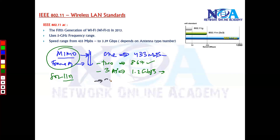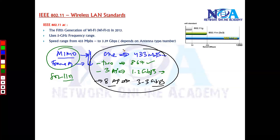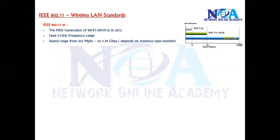Throughput increases as the number of antennas increases. For example, an eight-antenna access point — such as those used with digital TVs or set-top boxes — can go up to 3.3 Gbps. So technically, throughput depends entirely on the number of antennas used on the product, and we can say it ranges anywhere from around 400 Mbps to 3.3 Gbps.